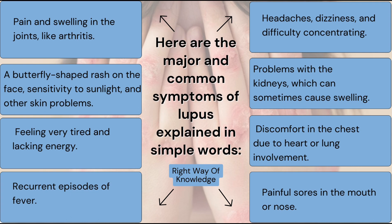Now let's discuss the symptoms so you can identify them. First, you will feel pain and swelling in the joints, similar to arthritis. Next, butterfly-shaped rashes will appear on your face. There is also sensitivity to sunlight — you will not be able to protect your skin from sunlight — along with other skin problems.